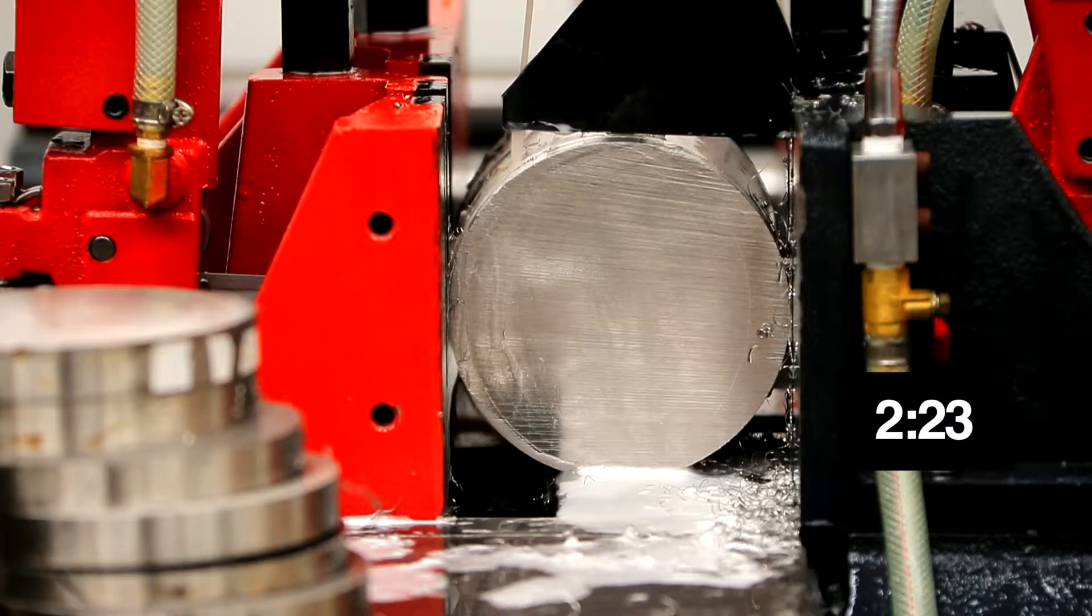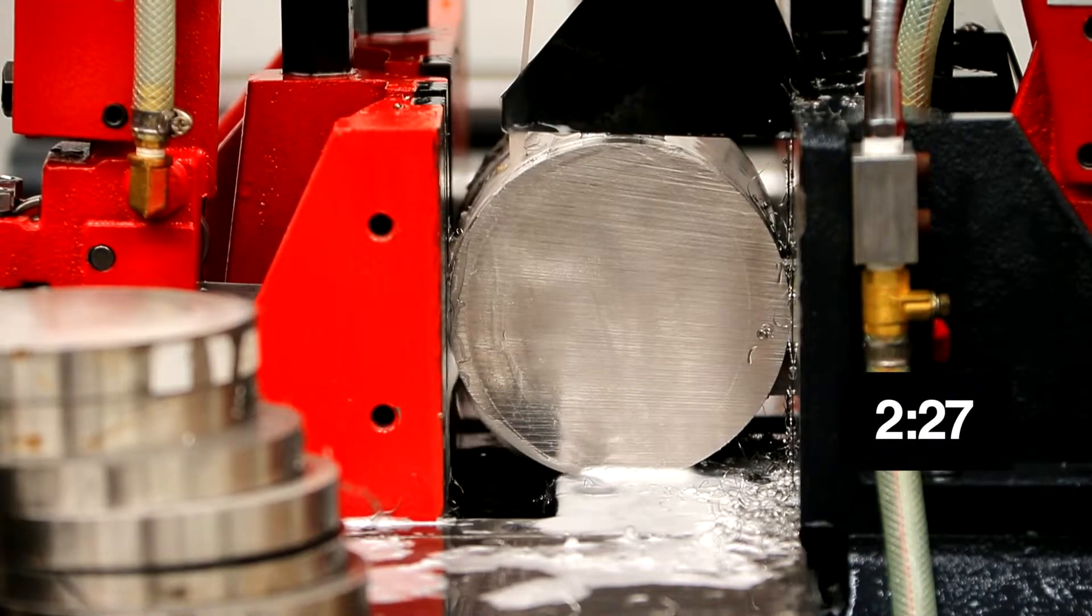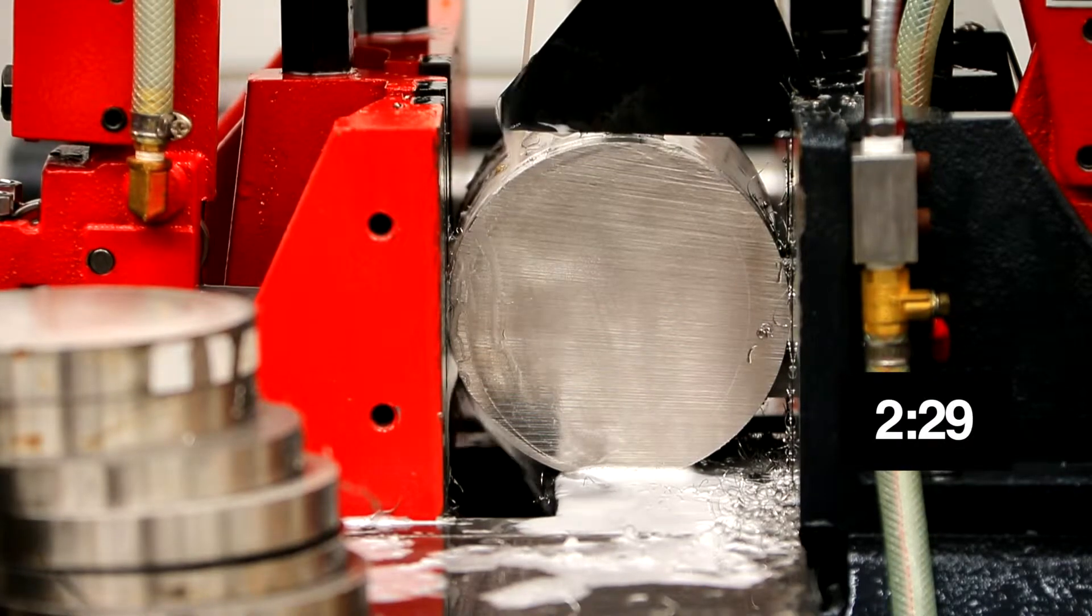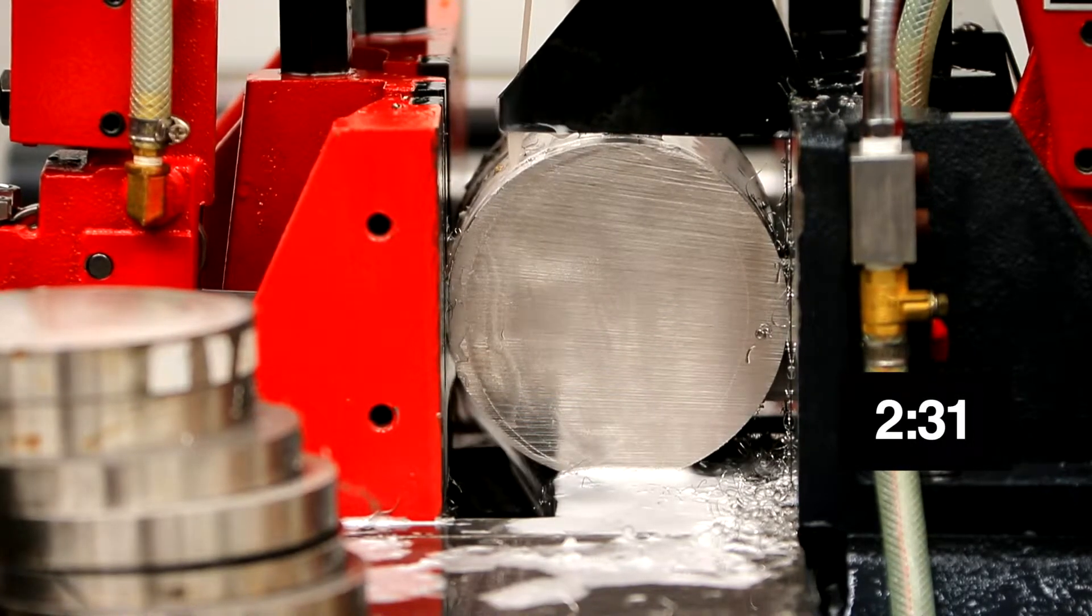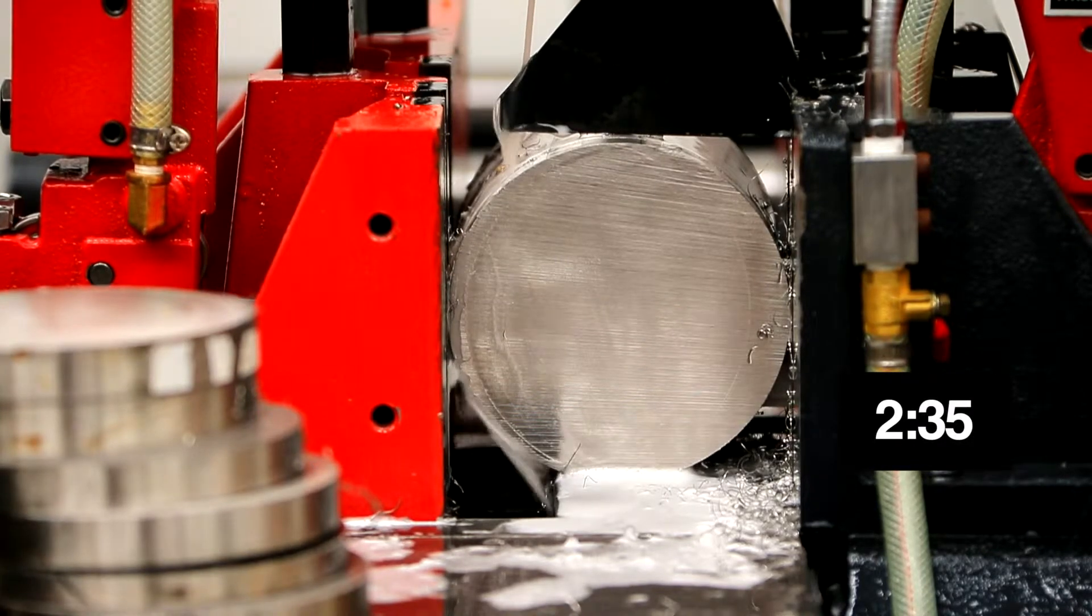Typically, carbide tip bandsaw blades are used for cutting your nickel-based alloy steels. Our carbide tip blade can also be used to cut a wide variety of materials, such as carbon and heat-treated steels.